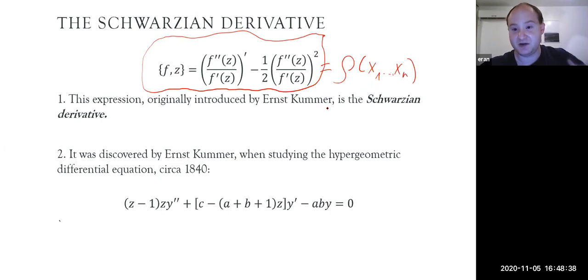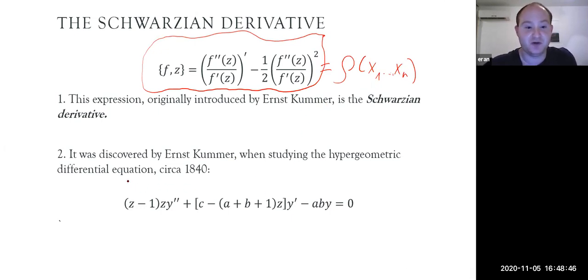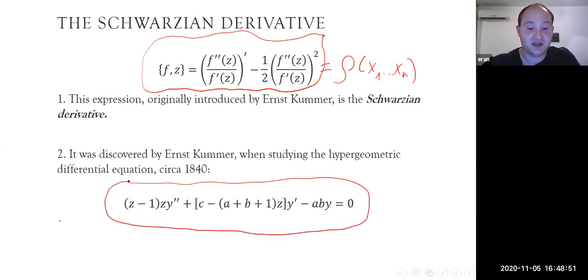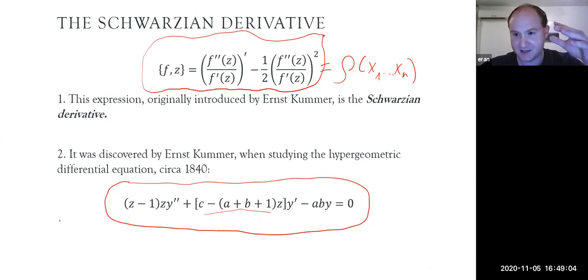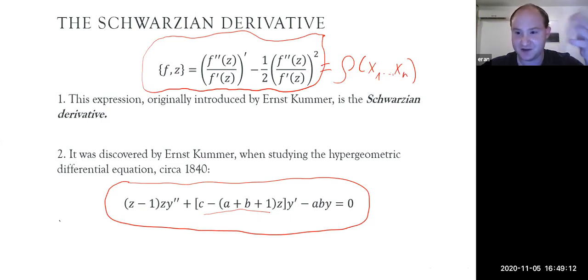Despite bearing the name of Hermann Schwarz, the Schwarzian derivative was originally discovered by Ernst Kummer when he studied solutions to the hypergeometric equation. What Kummer actually did was study how solutions change when varying the parameters a, b, c. This is essentially 19th century complex analysis, and we're supposed to be doing 20th century complex analysis.